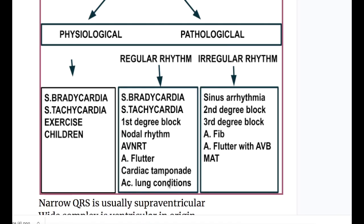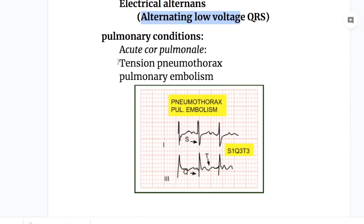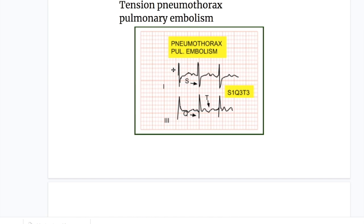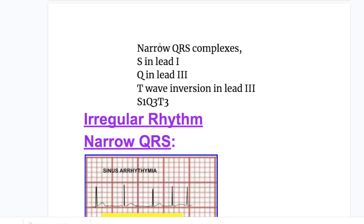Next are acute lung conditions. Acute cor pulmonale, tension pneumothorax, and pulmonary embolism cause narrow QRS complexes with tachycardia. Other EKG features in acute pulmonary conditions are an S wave in lead I, a Q wave in lead III, and T-wave inversion in lead III — the pattern is S1, Q3, T3. So narrow QRS with sinus tachycardia plus S1Q3T3 pattern is seen in acute pulmonary conditions.